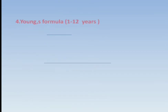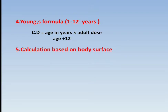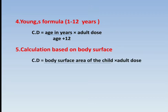The next formula is Young's formula, which is for 1 to 12 years. The formula is: Child dose = (Age in years × Adult dose) / (Age + 12). The fifth formula is based on body surface area: Child dose = (Body surface area of child × Adult dose) / 1.73 square meters.